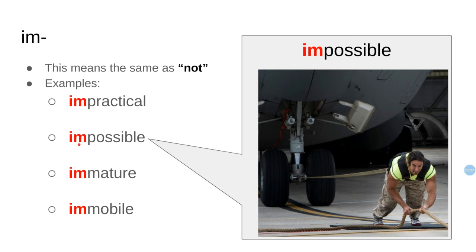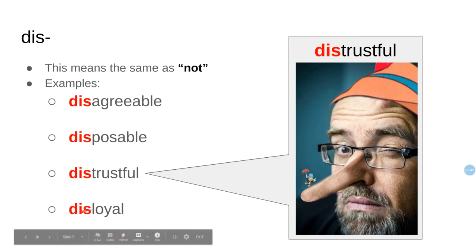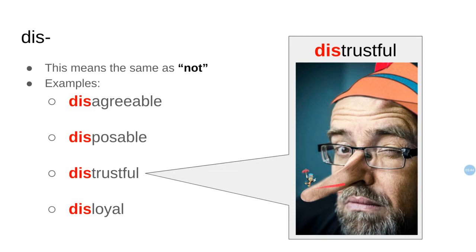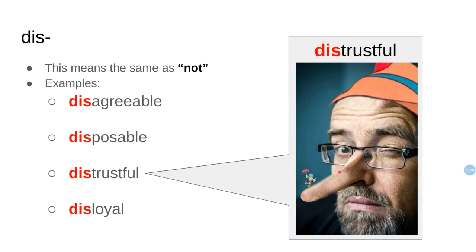Then we have 'dis-,' which means the same as 'not': distrustful, disagreeable, disposable, disloyal. Look at this man with the very long nose — like Pinocchio. Can we trust him? He's not trustful, he is distrustful.